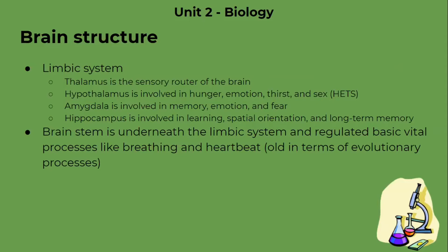The hypothalamus is involved in hunger, emotion, thirst, and sex — HETS, another mnemonic to help you remember. The thalamus is the sensory router of the brain — it takes in sensory information and routes it to the specific areas of the brain that will process it. The amygdala is involved in memory, emotion, and fear. A good mnemonic is to remember Amy Gedala, a very emotionally unstable person — so we can remember the amygdala's function through Amy Gedala.